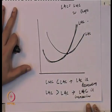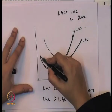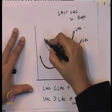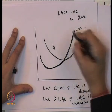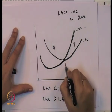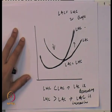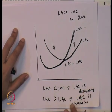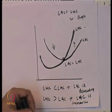Corresponding to the minimum point, LAC equals LMC. So LMC is below LAC when LAC is decreasing, and LMC is above LAC when LAC is increasing. At the minimum point, LAC equals LMC. Additionally, both LMC and LAC are U-shaped, and LMC always intersects LAC at the minimum point of the long run average cost curve.